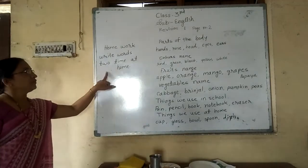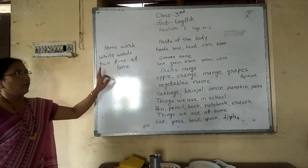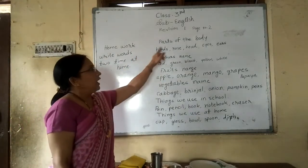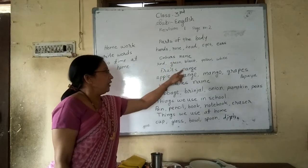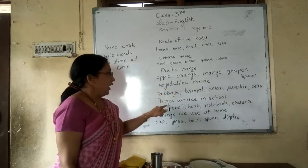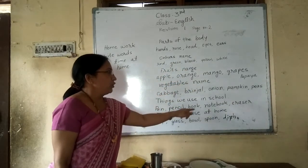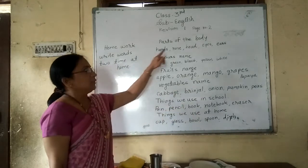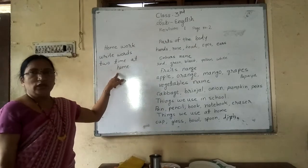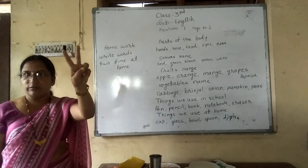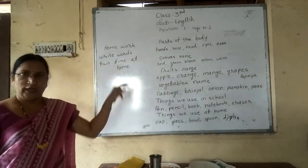Today's homework: write all words two times at home. The topics are parts of body, colors, fruits, vegetables, things we use in school, and things we use at home. Write down all these words two times in your notebook.